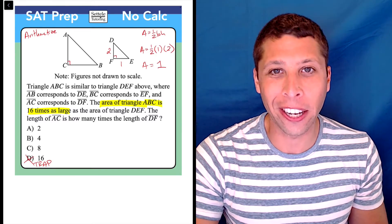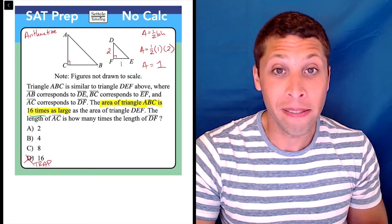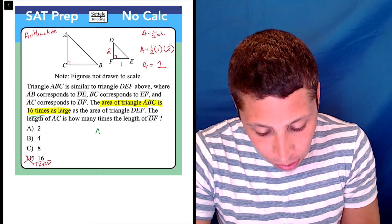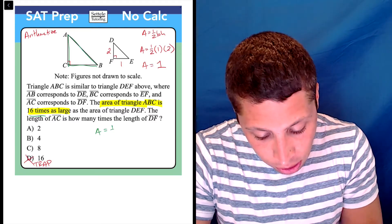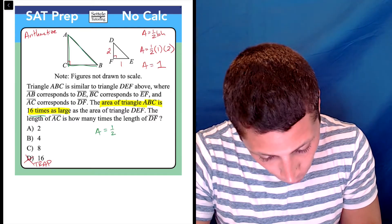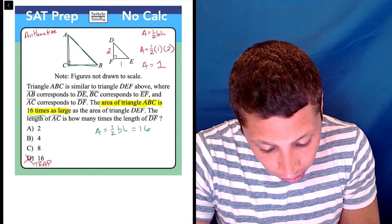So, what would be the area of a triangle that's 16 times greater? Well, it would be 16 times one, which is 16. So now I know that the big triangle, ACB, is going to be one half of base times height, but that's going to equal 16.